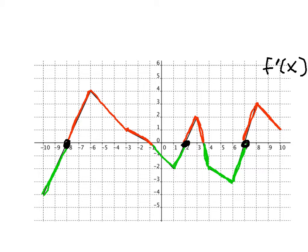Similarly, when we have places where the derivative transitions from positive to negative, we get maximums on the original function. So one of the first things the derivative can tell us is where the original function is increasing and decreasing, and because of that, it can also help us figure out where the original function has relative minimums and relative maximums. I'm going to switch back to the original graph to talk more about what the derivative can tell us.